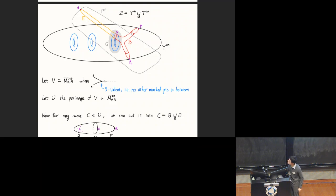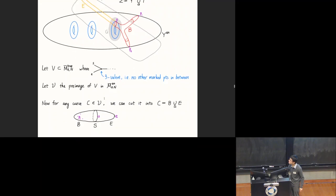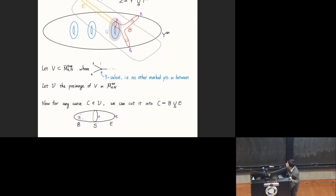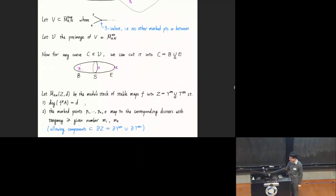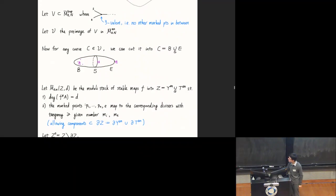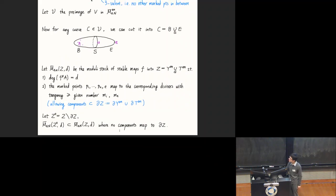We introduce the moduli stack of stable maps into the glued target Y glued with T, with the usual conditions: degree is given, marked points go to where we want with multiplicities greater than or equal to what we want. We need the greater-or-equal-to condition first to get something proper. There's also a worry in Gromov-Witten theory about bubbles—components of the domain curve that map to the boundary, which we don't like. So we also use a moduli space with no components mapping to the boundary. We consider this subspace M to be the locus where the body goes to Y, the end goes to T, and the marked point S goes to H—the smaller open polyhedral affinoid domain living inside G.